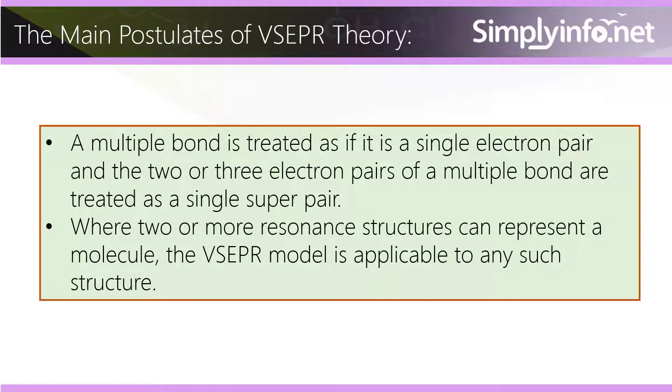A multiple bond is treated as if it is a single electron pair, and the two or three electron pairs of a multiple bond are treated as a single super pair. When two or more resonance structures can represent a molecule, the VSEPR model is applicable to any such structure.